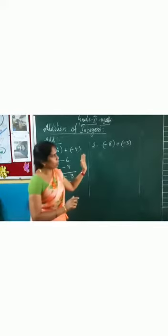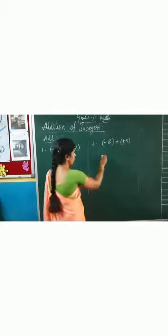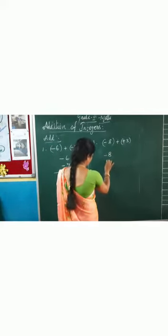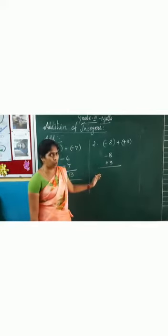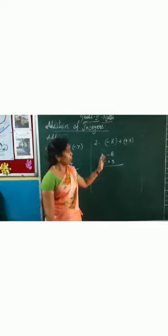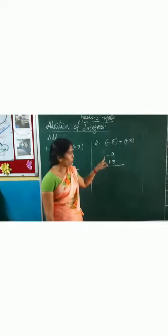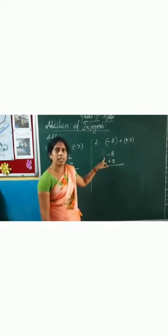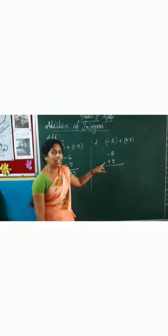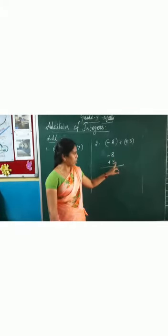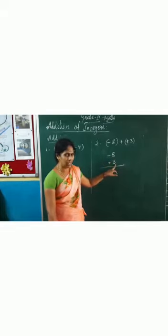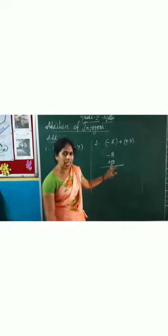Now let me go to the next type. Arrange the numbers vertically. The first number is minus 8 and the next number is plus 3. Now you want to add these two numbers. Before adding, look at the symbol — one number is a negative number and the other is a positive number. So when you are adding and different symbols are there, you want to do subtraction.